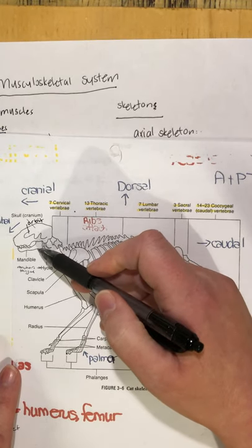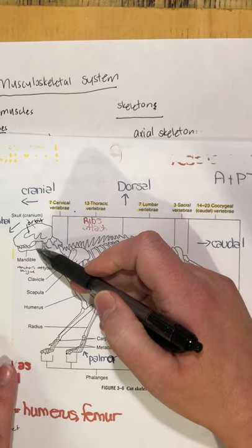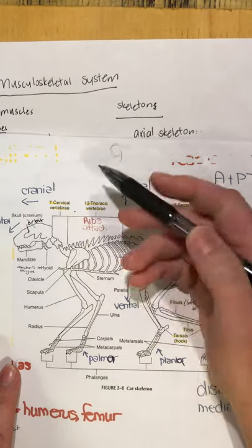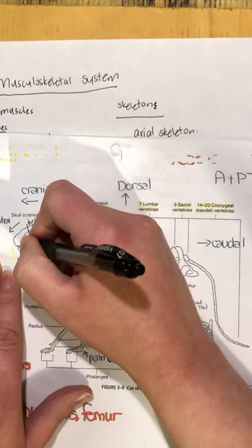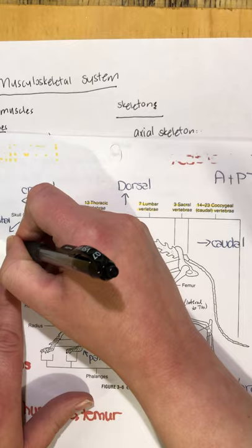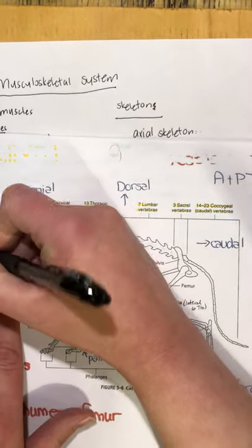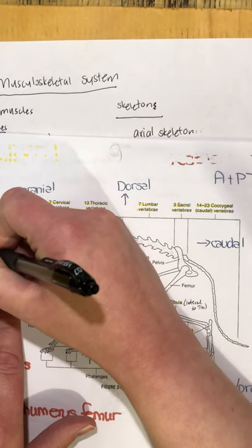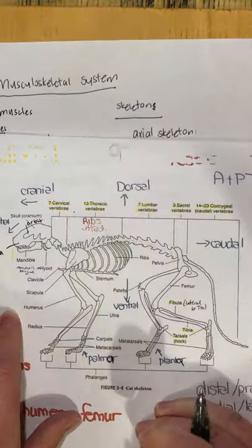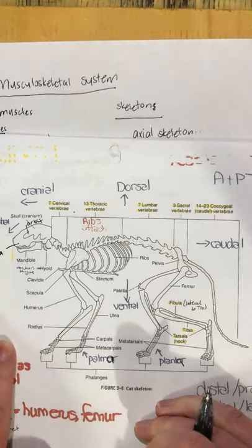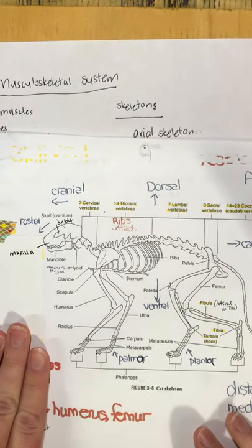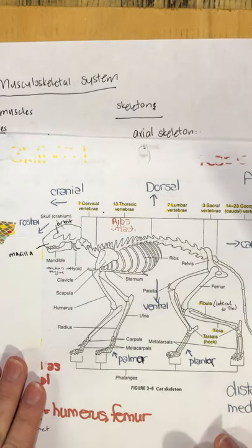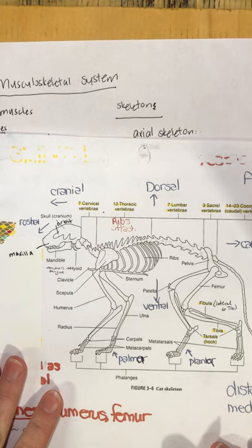When an animal is eating, chewing, or vocalizing, the mandible is the only thing moving. The upper jaw is the maxilla, and the mandible is the lower jaw.